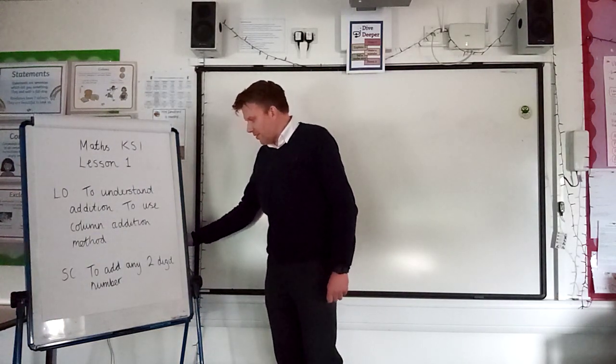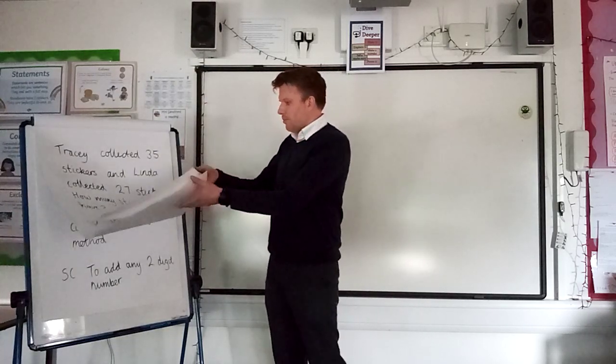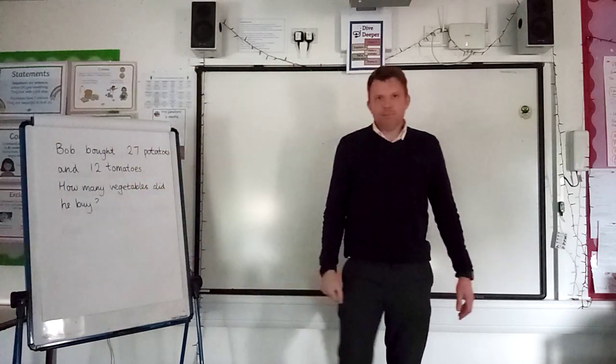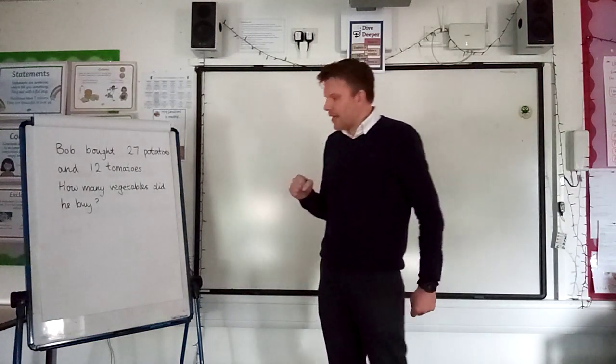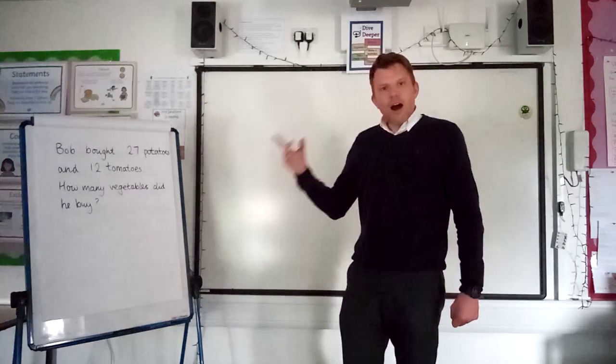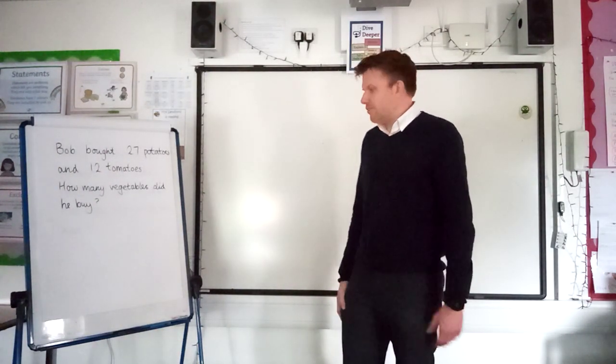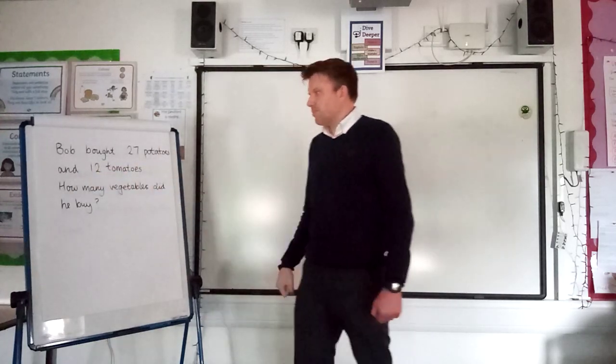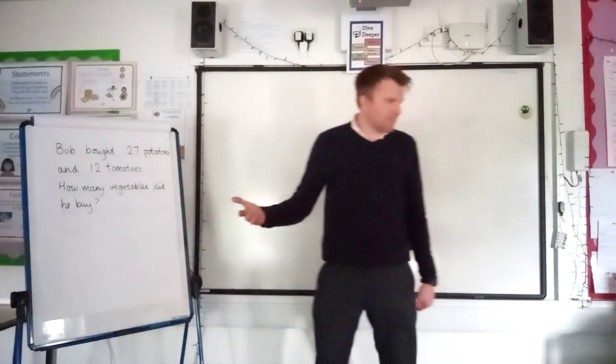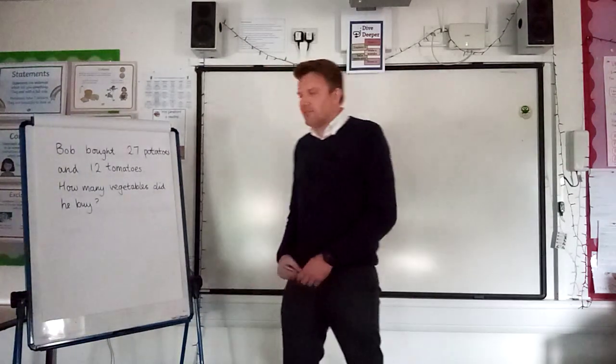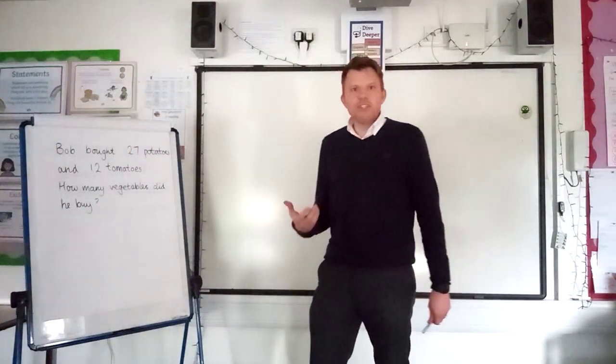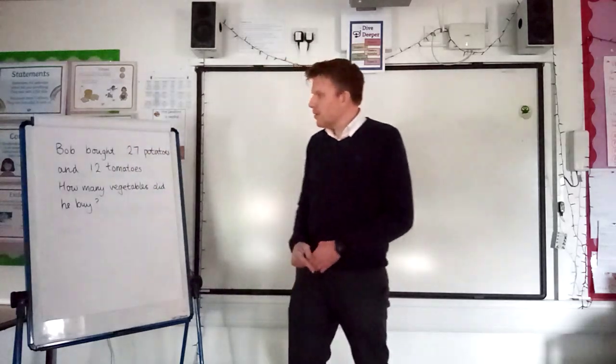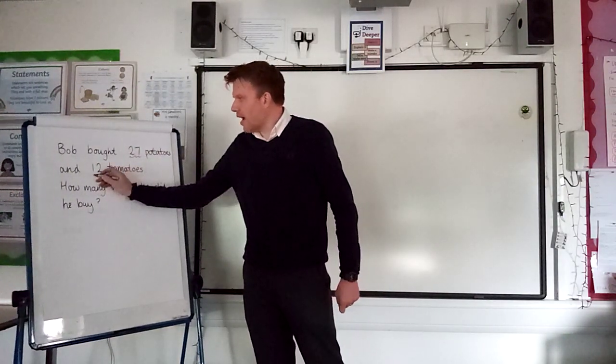I was having a little think and I've come up with a word problem. Here we are. My favourite person, Bob! I have a word problem here and it involves addition. I wonder if you can work out what we need to add together. I think it's pretty straightforward. Bob bought 27 potatoes and 12 tomatoes. How many vegetables did he buy? So, the first thing you need to do is you need to work out what two numbers you have to use in the sum. Well, if you have a look, it's pretty straightforward, isn't it? You can see there are only two numbers in this sum. We have 27 and we have 12.